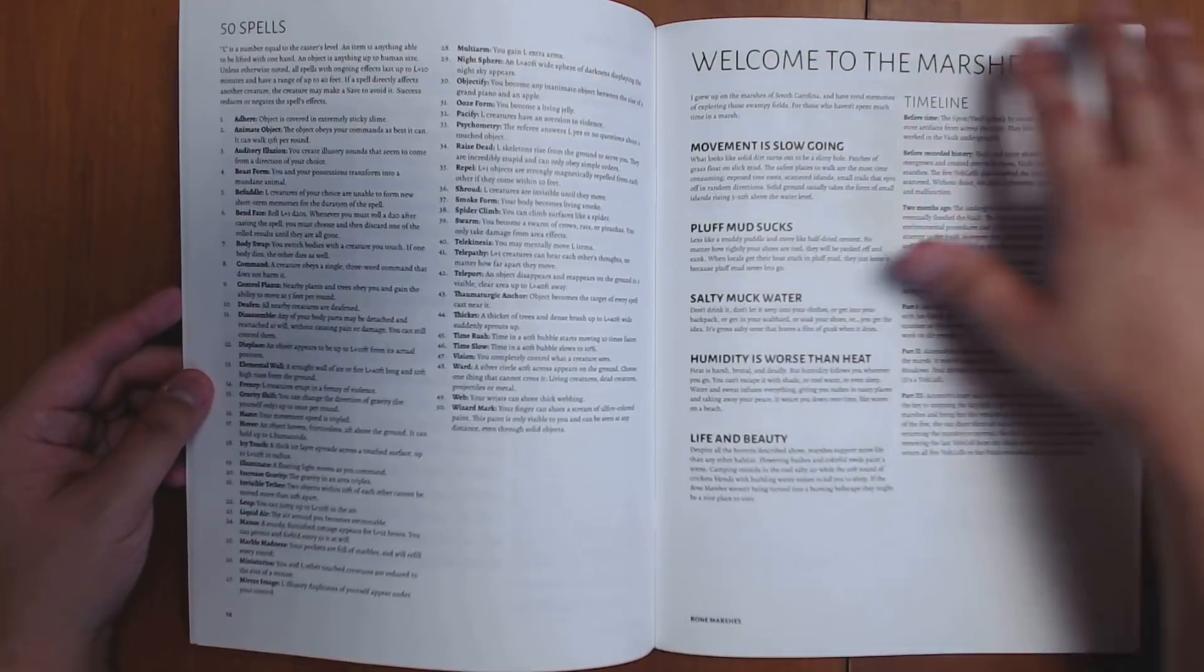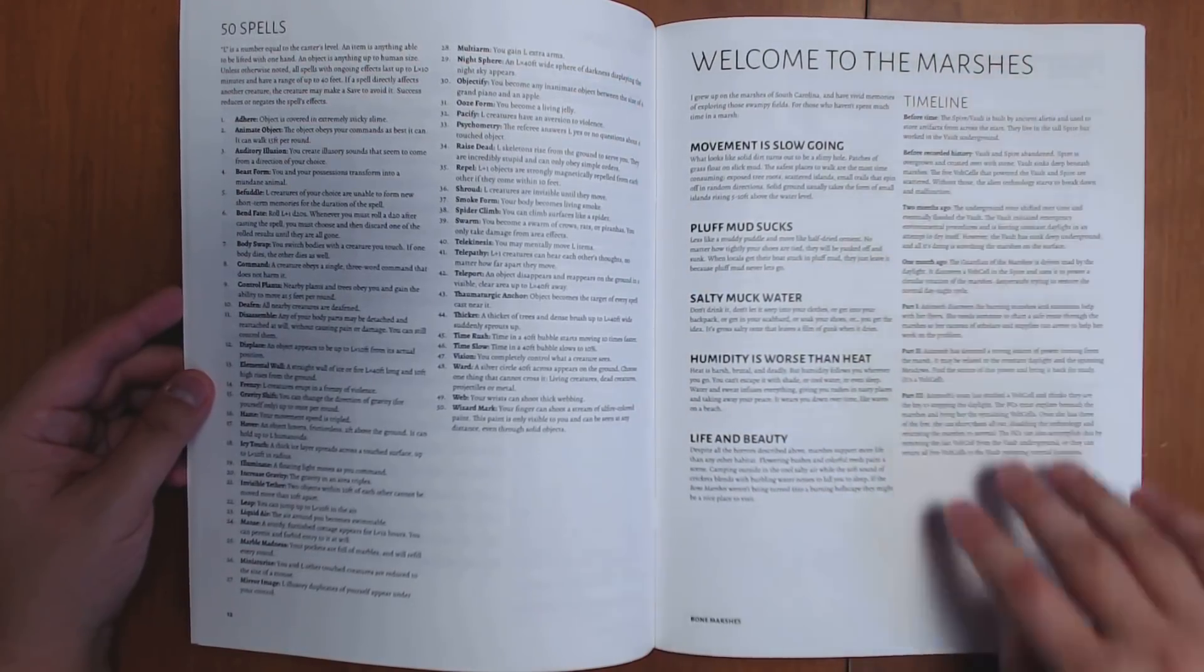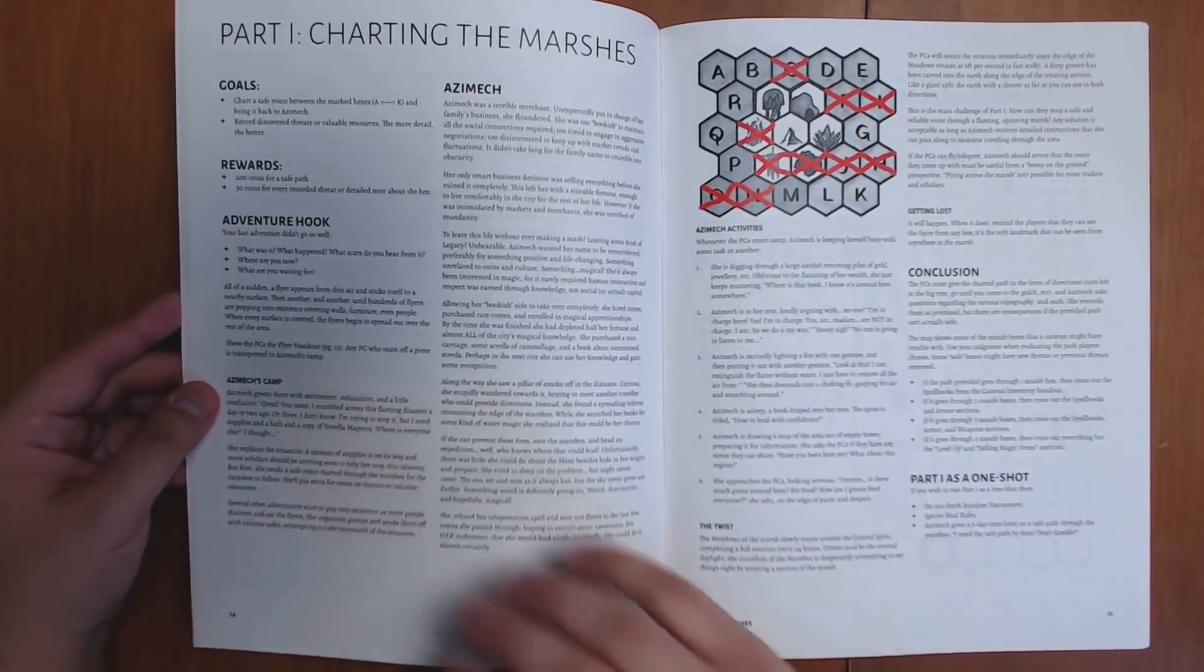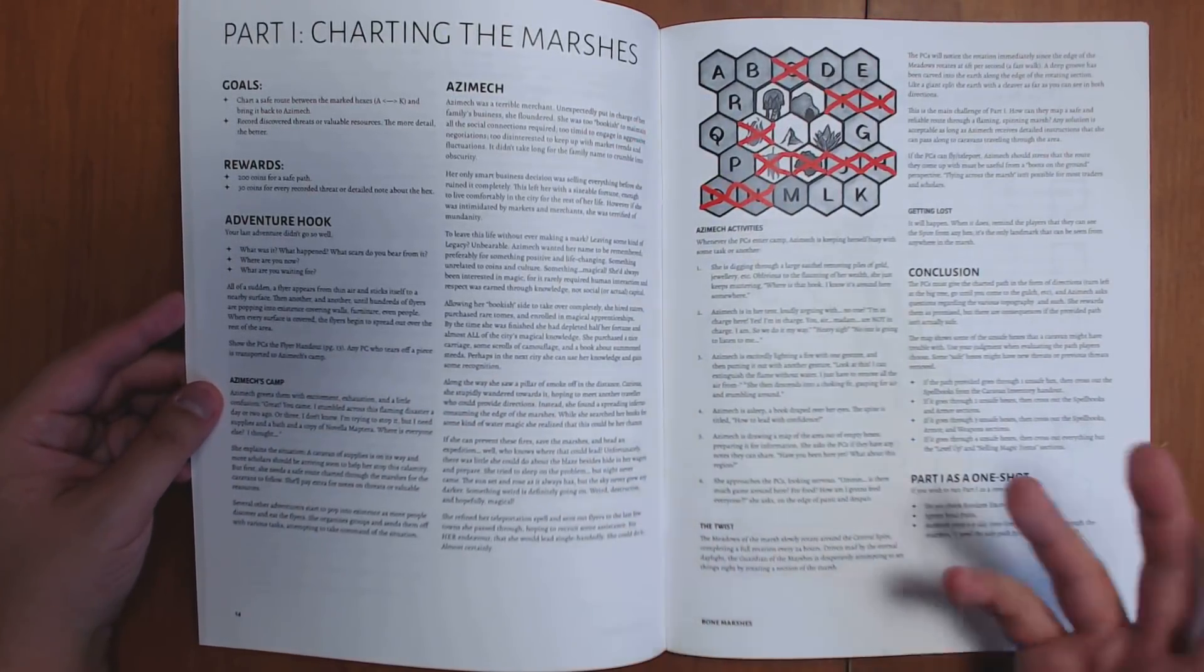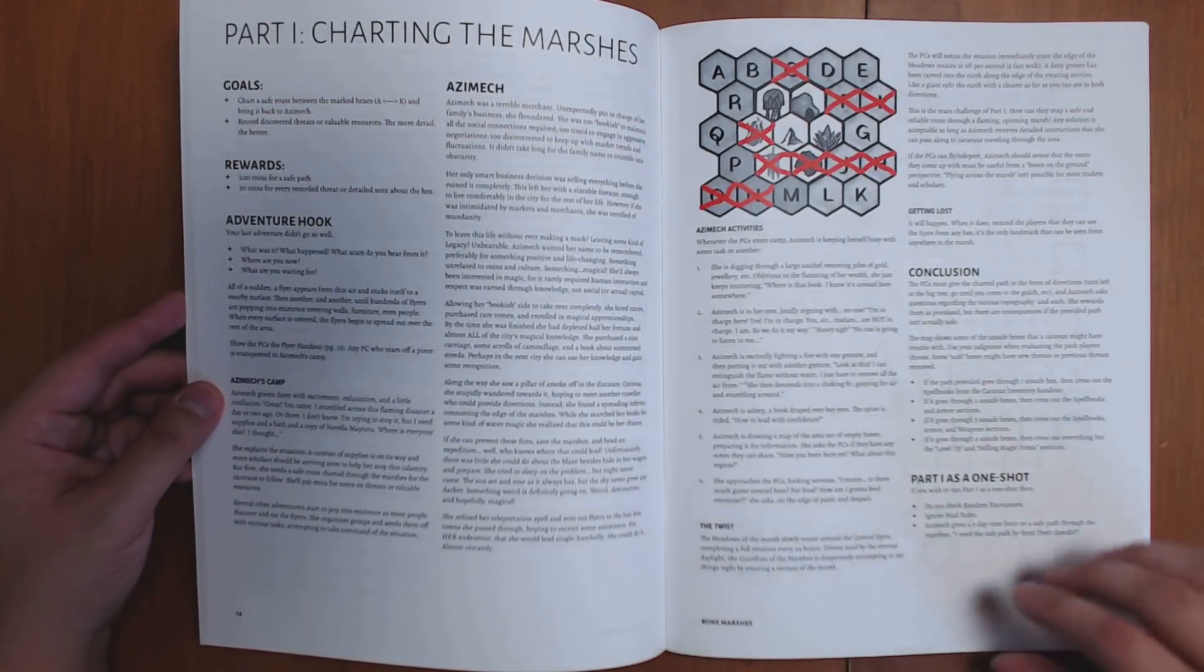We have a general idea of how the marshes work, what things look like, and the timeline of what's going on here. There's definitely some sci-fi-ish aspects where the weirdness in the swamp could possibly be due to extraterrestrial interference.